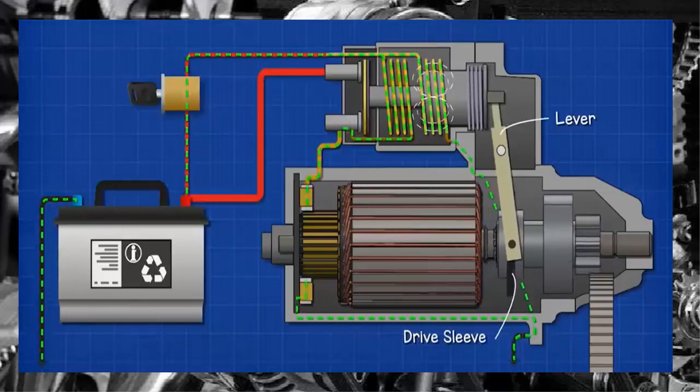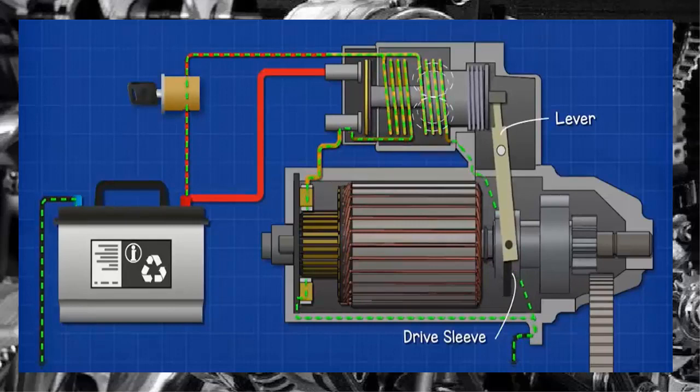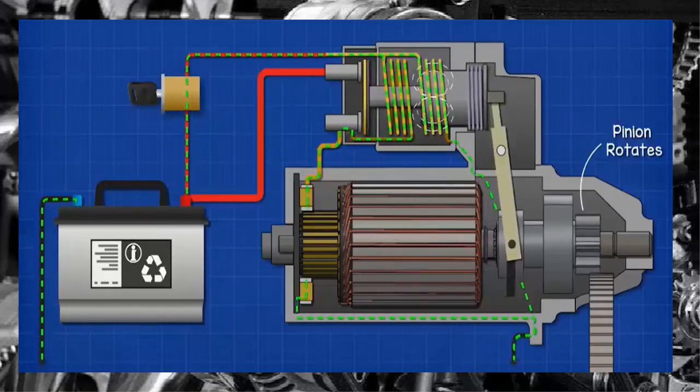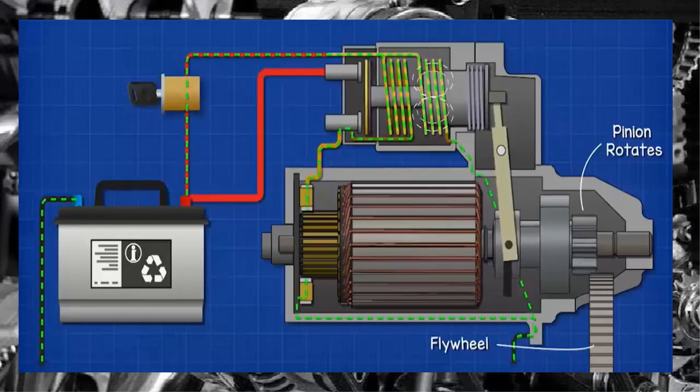As the piston moves back, it pulls on the lever. This pivots and transfers the motion to the drive sleeve, pushing it forwards. As it moves forwards, it slightly rotates the pinion, allowing it to lock the rollers in the clutch and slide the pinion into the flywheel.